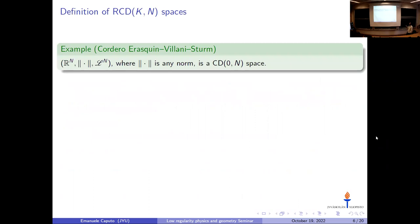A problem with the CD(K,N) class for our purposes is that it contains Finsler structures. The simplest example is by Cordero-Erausquin–Villani–Sturm: R^n with any norm and the n-dimensional Lebesgue measure is always a CD(0,N) space, including norms not coming from a scalar product such as the L^1 norm. The idea is to rule out such examples by passing to a subclass: we say a metric measure space is RCD(K,N) if it satisfies CD(K,N) and the Sobolev space W^{1,2} is Hilbert. This infinitesimal Hilbertianity is crucial for calculus in these spaces.